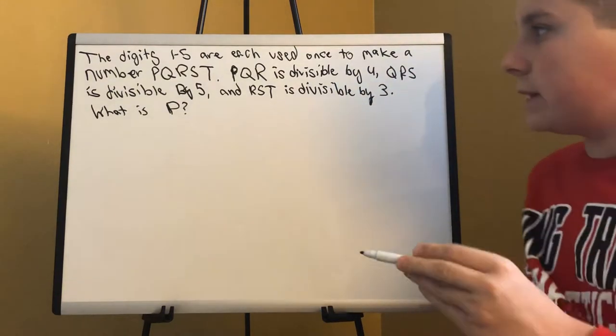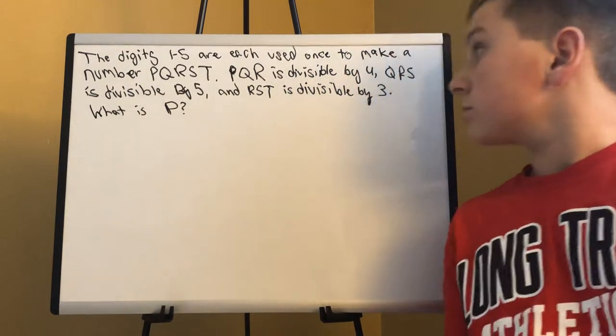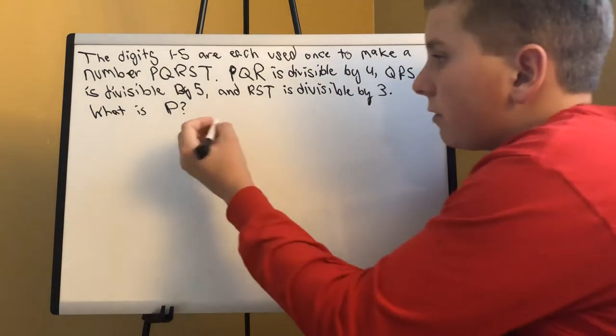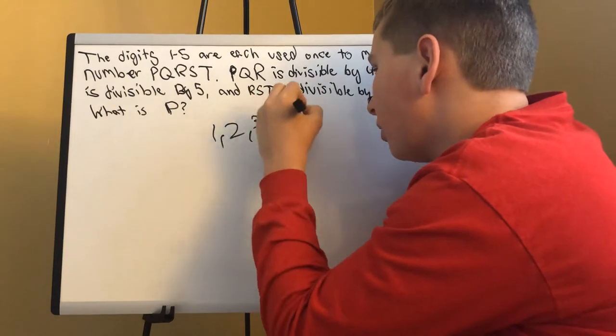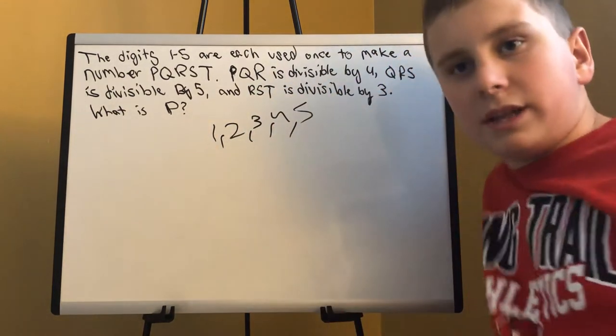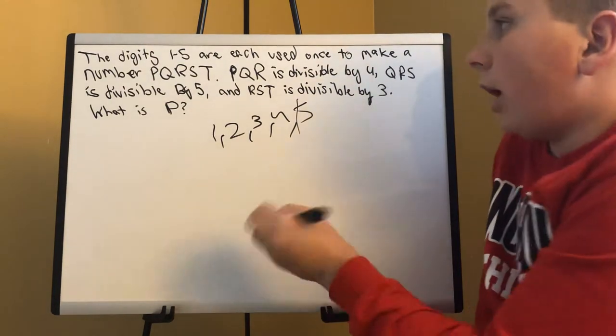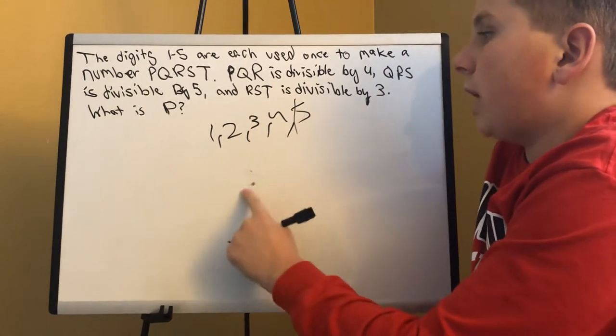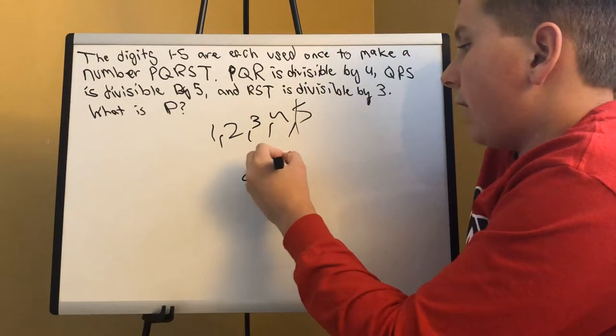First thing I notice is, okay, this is divisible by 5. What does that mean? Well, it means that of the numbers 1, 2, 3, 4, 5, we can only find one of these numbers divisible by 5, and that's this one. So that means automatically we already got one. Sorry, S equals 5.